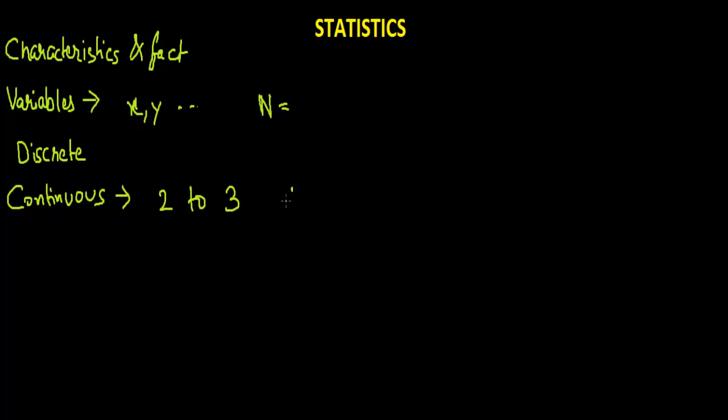It can have any value between 2 to like 2.1, 2.15, 2.2, 2.25 something like this. Whereas a discrete variable refers to integer values like 2, 5, 7 and so on.